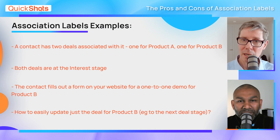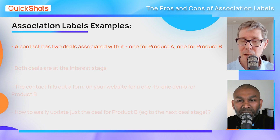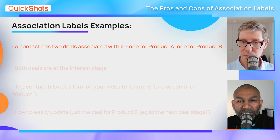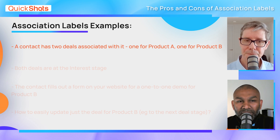Firstly, association labels - what are they? They're a way to set an association between two objects, for example a contact and a deal. A contact might have multiple deals, but on one of the deals you set an association label. In most examples, they talk about things like 'decision maker' or 'influencer' as an association label for that contact with that particular deal, so you can see that a contact is an influencer or a decision maker on specific deals.